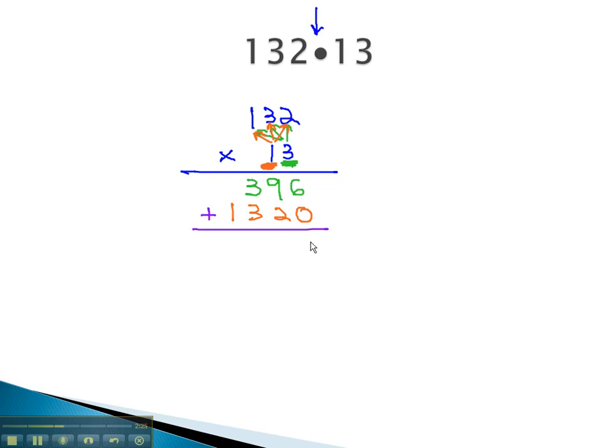Adding from right to left, 6 and 0 is 6. 9 and 2 is 11, carrying the 1. 3, 1, and 3 is 7. And finally, we bring down the 1 to get our final answer of 1,716.